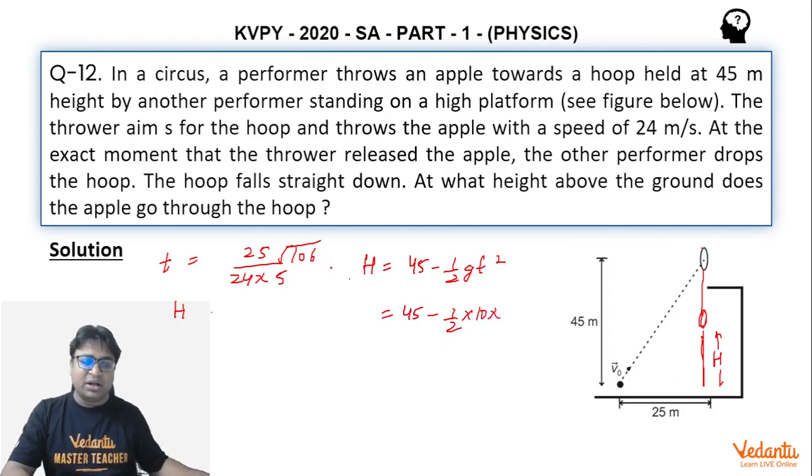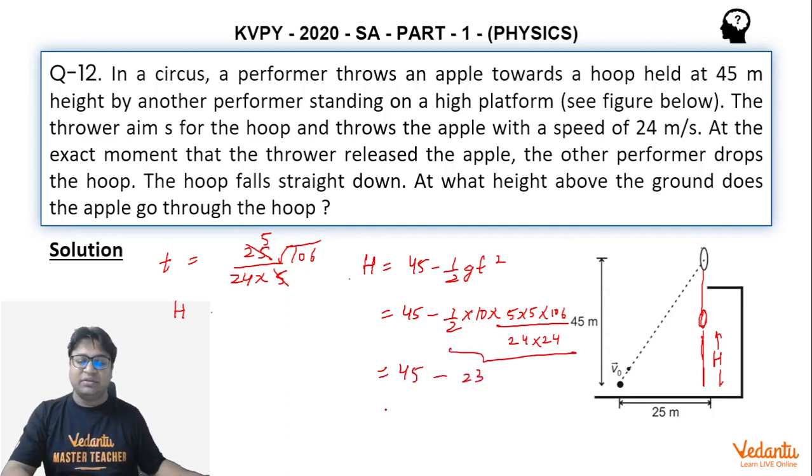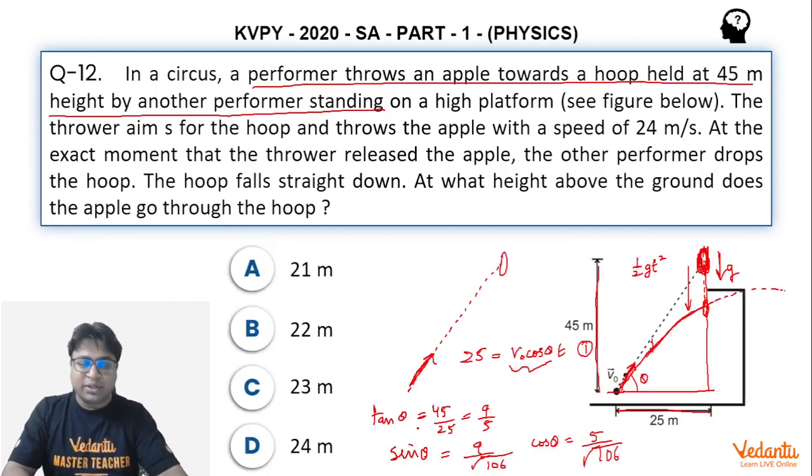We have to just finish this calculation here. So 45 minus half, let's consider g as 10, and t square will become, let's cancel few things here, it will become 5. So 5 into 5 into 106 divided by 24 into 24. We have to finish this calculation, and on doing that we will get that this number is approximately 23.